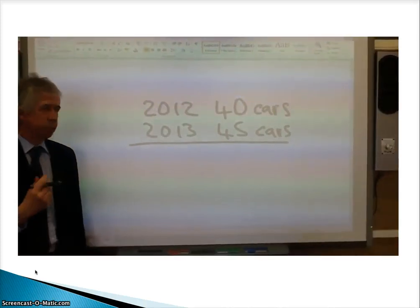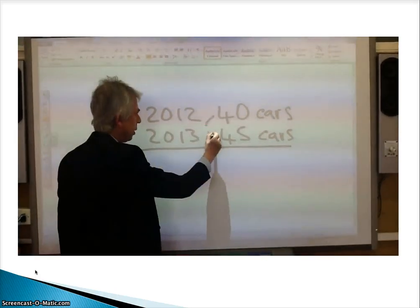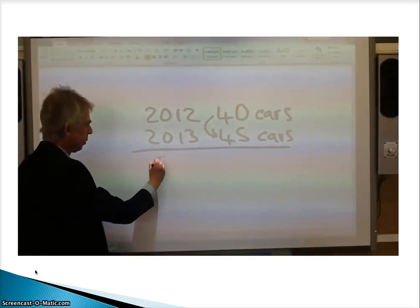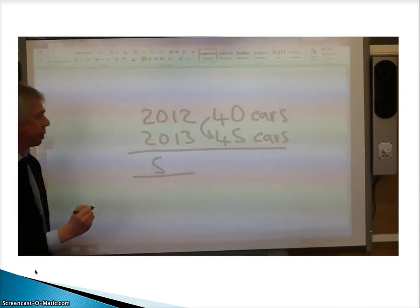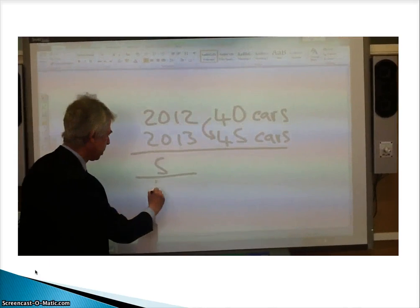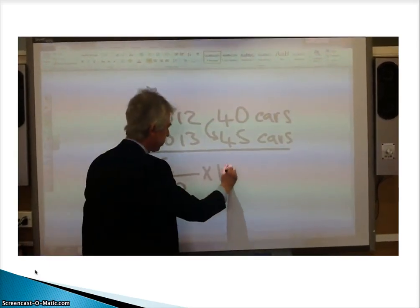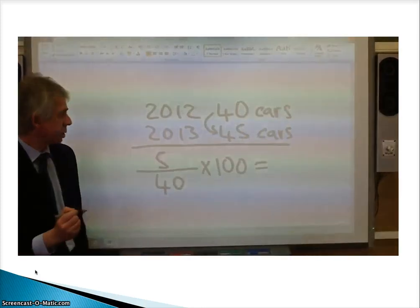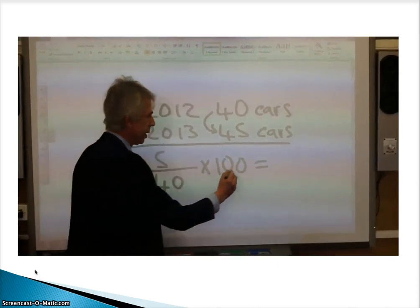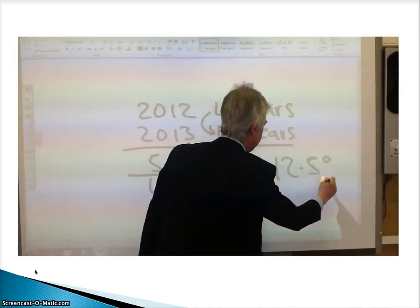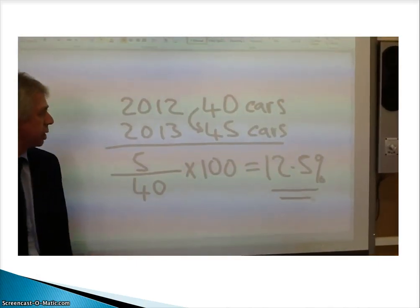What we want to find out is the percentage increase in sales. First of all, look at the increase — it's gone up from 40 to 45, therefore the increase is 5. We do the change divided by the original: the original was 40. Then we multiply by 100 to turn that into a percentage. If you do 5 divided by 40 times 100, you should find that comes to 12.5%.